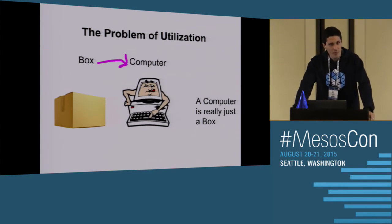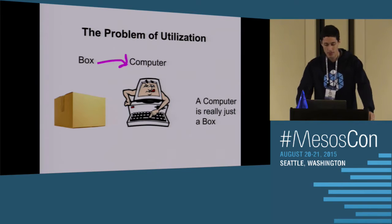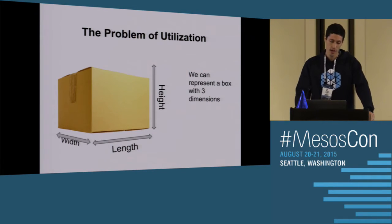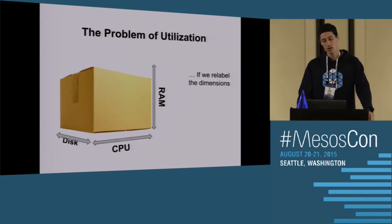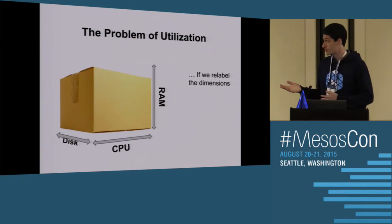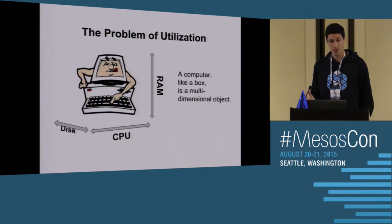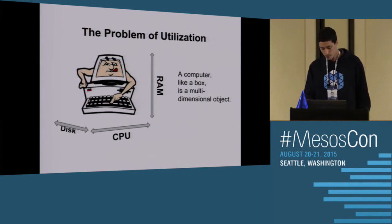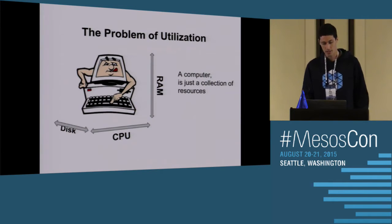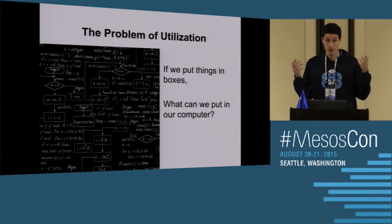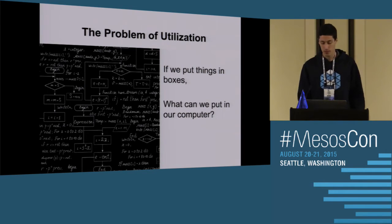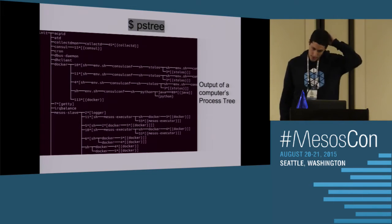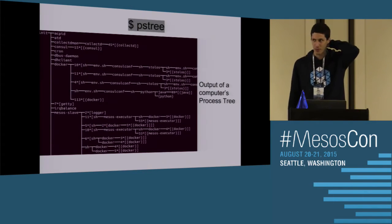A box is really just an analogy for a computer. If a computer is a box and we can represent a box in three dimensions, then if we relabel those three dimensions to disk, RAM, and CPU, we've represented a computer with three dimensions. This is a very important concept, because now what we've said is a computer is just a collection of resources. What can you put in a computer? Processes.